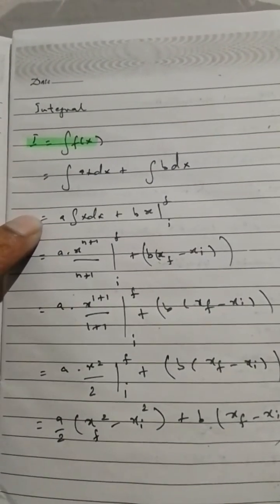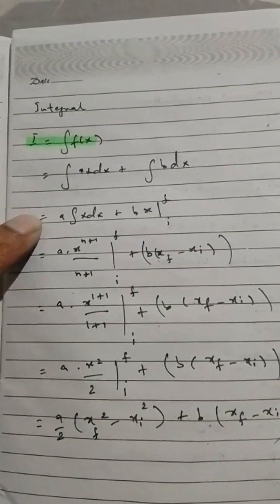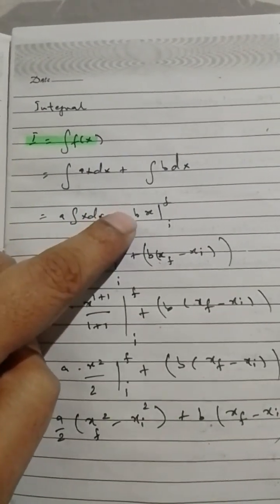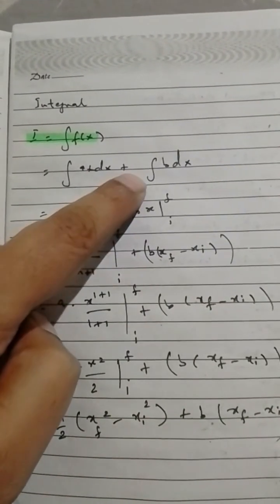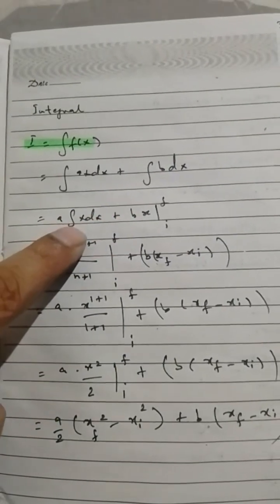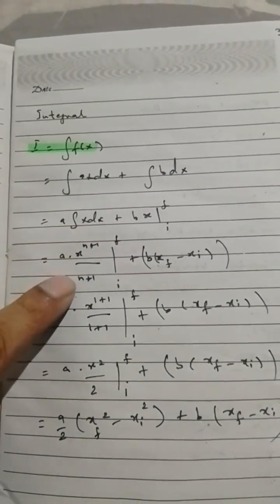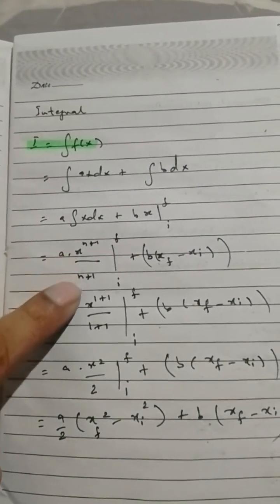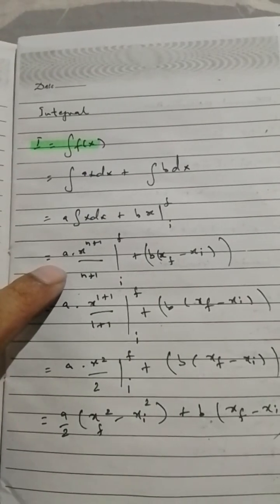In this case, b comes out and we integrate 1, which gives us x. Now we're left with integrating x, which is x^(n+1)/(n+1), with a constant outside.